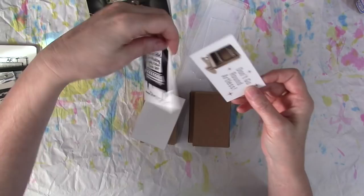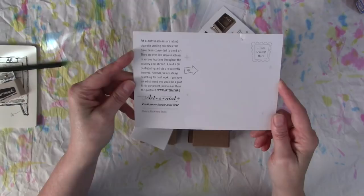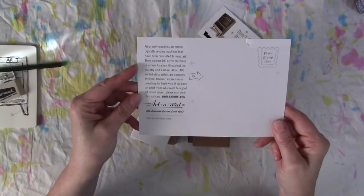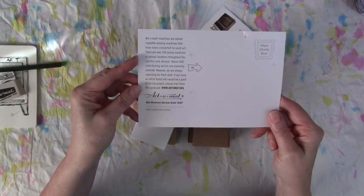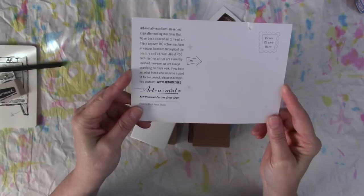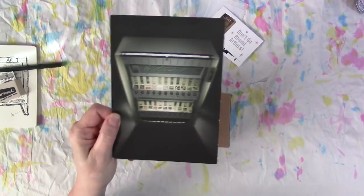You want your little advertisement to entice people to yank your knob. And so they give you some suggestions, ideas for how to do that, which I'm really glad. Because that's the only thing I was really stressing about, is that part. And then you get their little business cards. You get this is a sticker. And you do get this postcard, which says Artomat machines are retired cigarette vending machines that have been converted to vend art. There are over 100 active machines in various locations throughout the country and abroad. About 400 contributing artists are currently involved. However, we are always searching for fresh work. If you have an artist friend who would be a good fit for our project, please mail them this postcard.